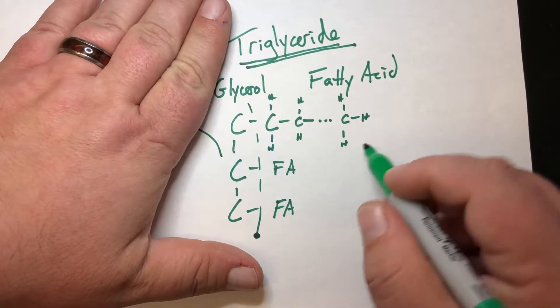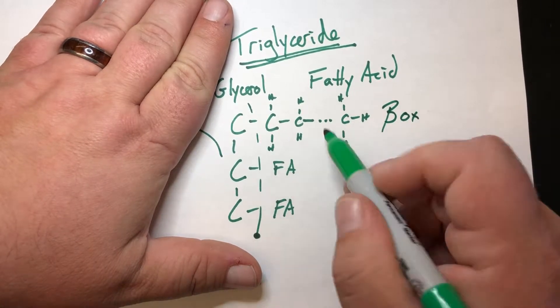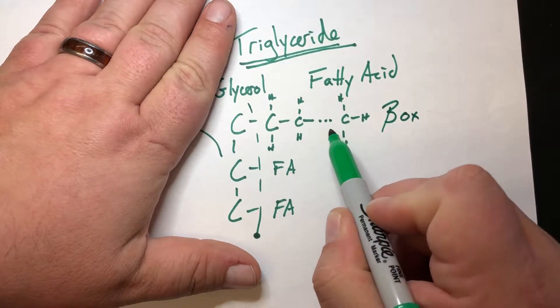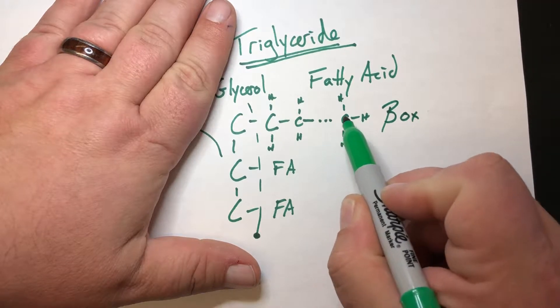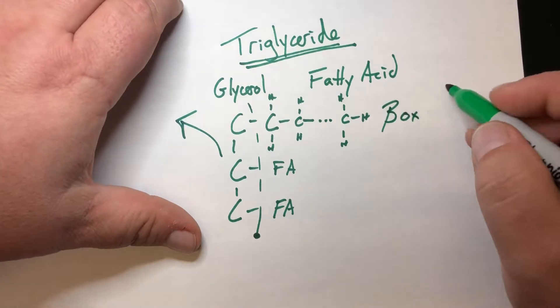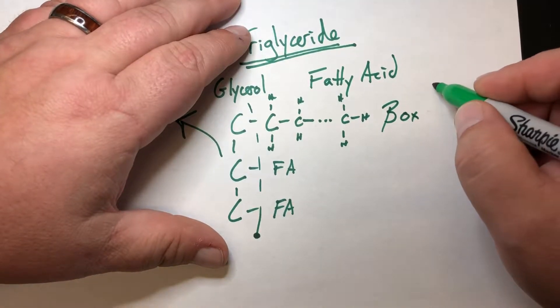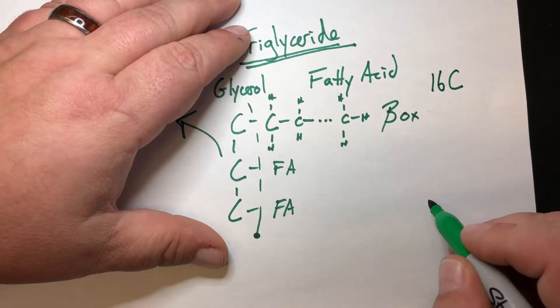The fatty acid chains, however, go through a process called beta-oxidation, where essentially what happens is enzymatically we go through and process two carbons at a time in these fatty acid chains. Now the fatty acid chains could be really long, but let's just do the math for a 16-carbon fatty acid chain.